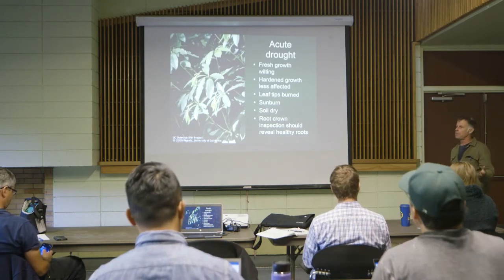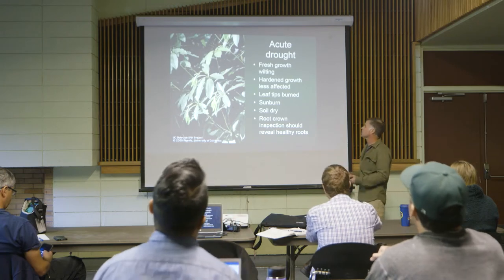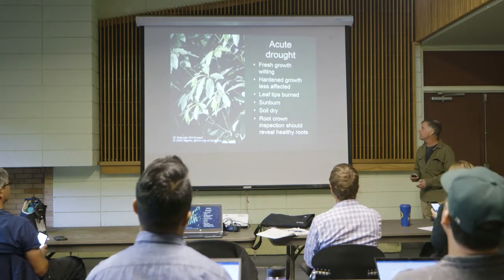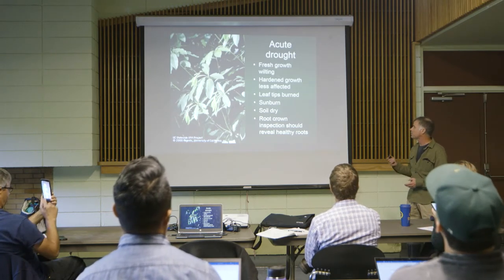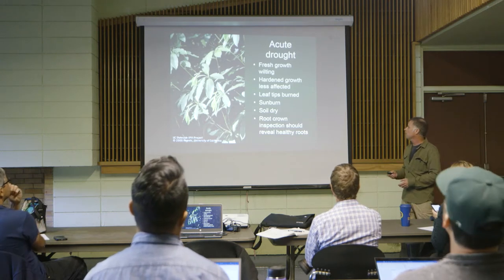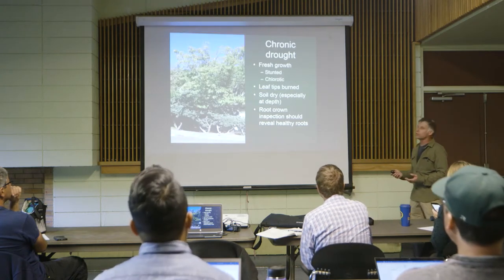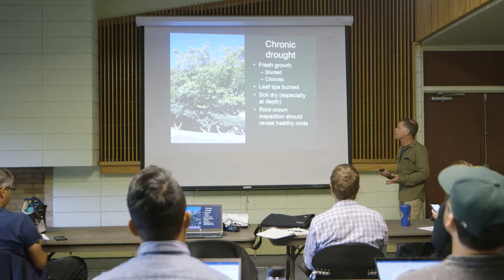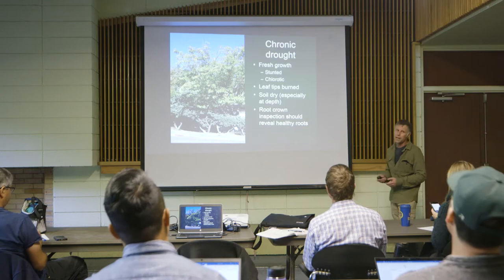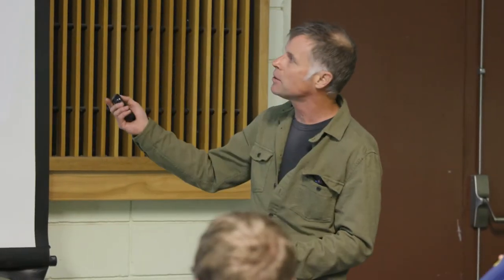So if we have acute drought, what are we going to see? Fresh growth wilting, hardened growth less affected, potentially some sunburn on mature leaves. The soil will be dry, and if we do a root crown inspection, we should expect to find healthy roots. In chronic drought, the fresh growth will be stunted and often chlorotic. A plant that doesn't have water can't move minerals, can't build accessory pigments that help prevent sunburn, so it's running a deficit every year.